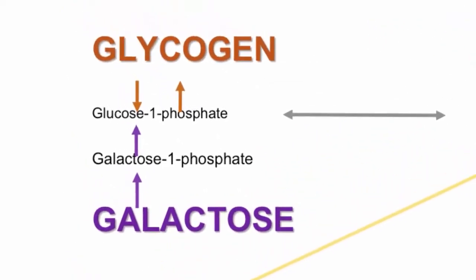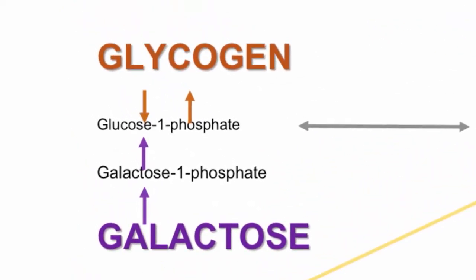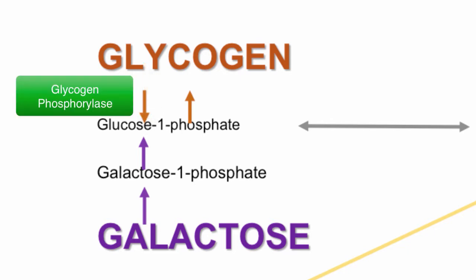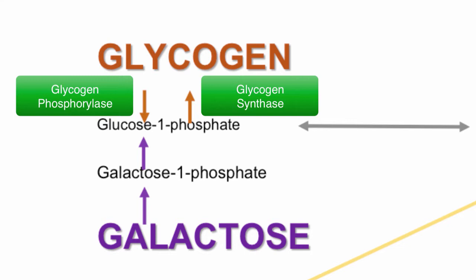The second initial enzyme we will look at is the one that breaks down glycogen into glucose 1-phosphate, and that is glycogen phosphorylase. There is also an enzyme called glycogen synthase, which is a catalyst for the opposite reaction — that is, creating glycogen from glucose 1-phosphate.